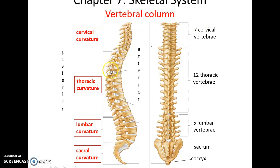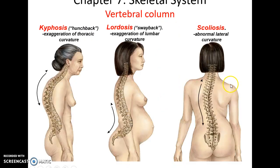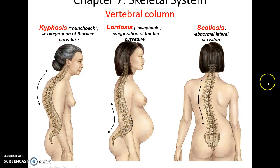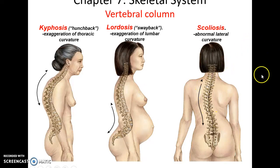The vertebral column also gives curvature to our back: the cervical curvature points anteriorly, thoracic curvature points posteriorly, lumbar curvature points anteriorly, and sacral curvature points posteriorly. Exaggerations of these curvatures include kyphosis — an exaggeration of the thoracic curvature, also called hunchback, common in elderly people — lordosis or swayback, an exaggeration of the lumbar curvature seen in pregnant women — and scoliosis, an abnormal lateral curvature of the vertebral column.